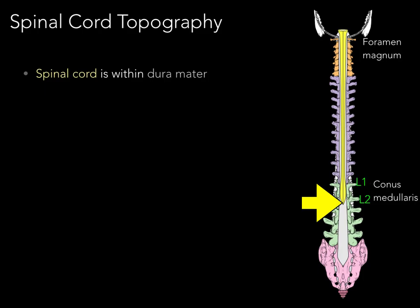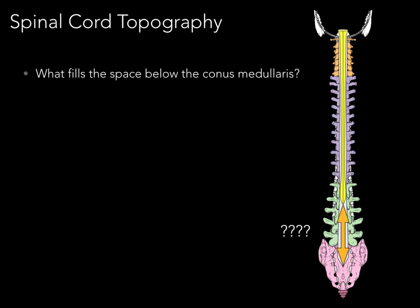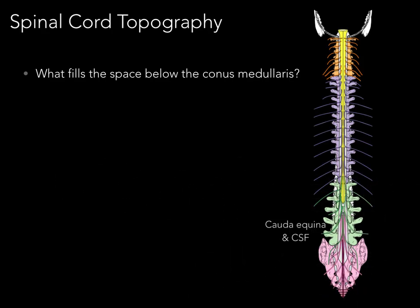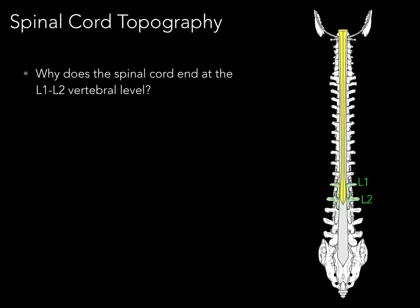The first question: what fills the space below the conus medullaris within the vertebral canal? The answer is the cauda equina and cerebrospinal fluid. Cerebrospinal fluid is in the subarachnoid space around the entire spinal cord, and it also fills the area in the vertebral canal below the conus medullaris.